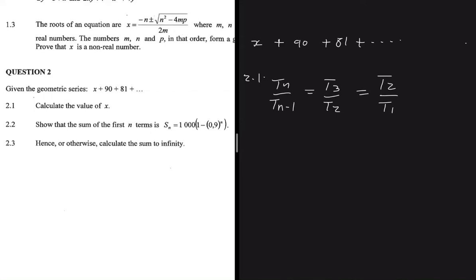So what is T3? T3 is 81 and T2 is 90. We're saying that T2 is 90 and then T1 is X. So from here we can solve for X. We're going to have 81 multiplied by X equals 90 multiplied by 90.